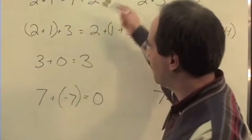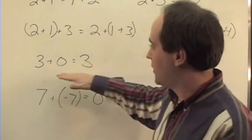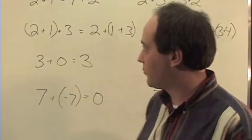So we're going to start out with some of the properties: the commutative, associative, the identity property, and the inverse property.